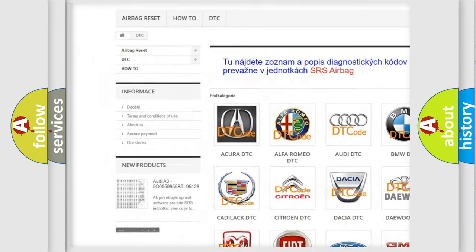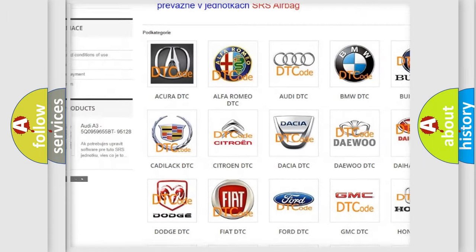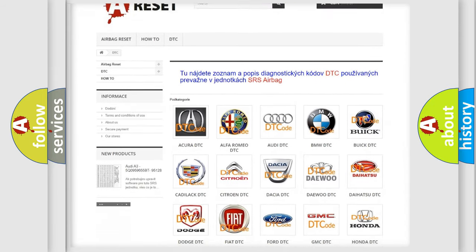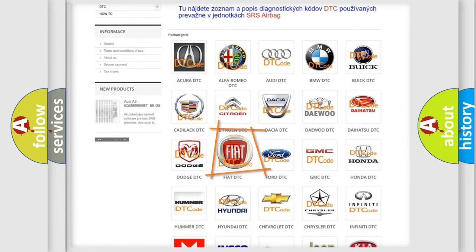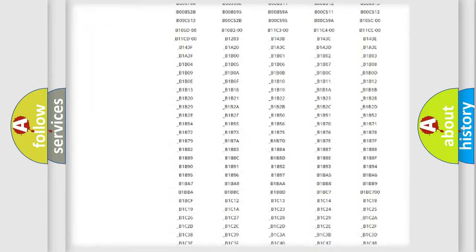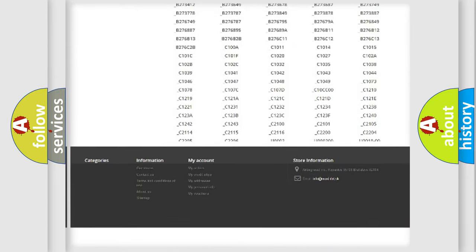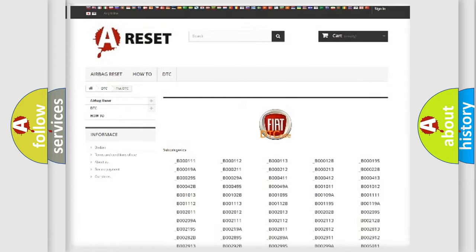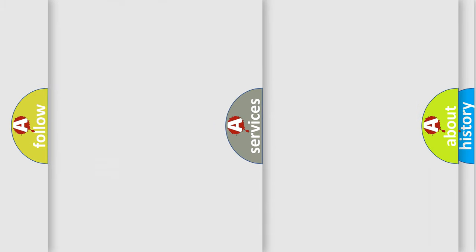Our website airbagreset.sk produces useful videos for you. You do not have to go through the OBD2 protocol anymore to know how to troubleshoot any car breakdown. You will find all the diagnostic codes that can be diagnosed in Fiat vehicles, also many other useful things.